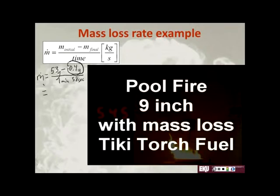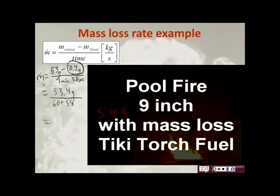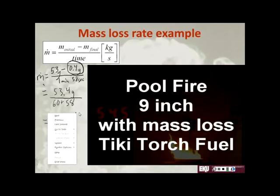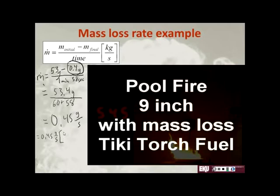So that negative goes to positive, giving us 53.4 grams as our mass change. We need time in terms of seconds, so this is 60 plus 58. m-dot is equal to 53.4 divided by (60 plus 58), which equals 0.45 grams per second. Maybe we want it in terms of kilograms per second: 0.45 grams per second times 1 kilogram over 1,000 grams.